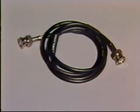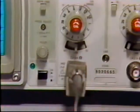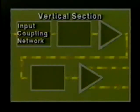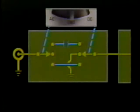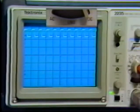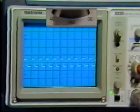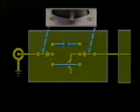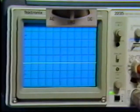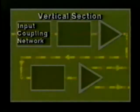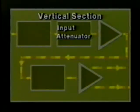After a signal source is connected to the vertical input BNC, the signal flows to the vertical input coupling network. The coupling network allows selection of either DC, AC, or ground coupling. DC provides a direct path to the vertical amplifier, coupling both AC and DC components of the applied signal. AC blocks the DC component by inserting a capacitor in series with the input. The ground position disconnects the signal and shorts only the attenuator input to ground — it does not short the applied signal to ground.